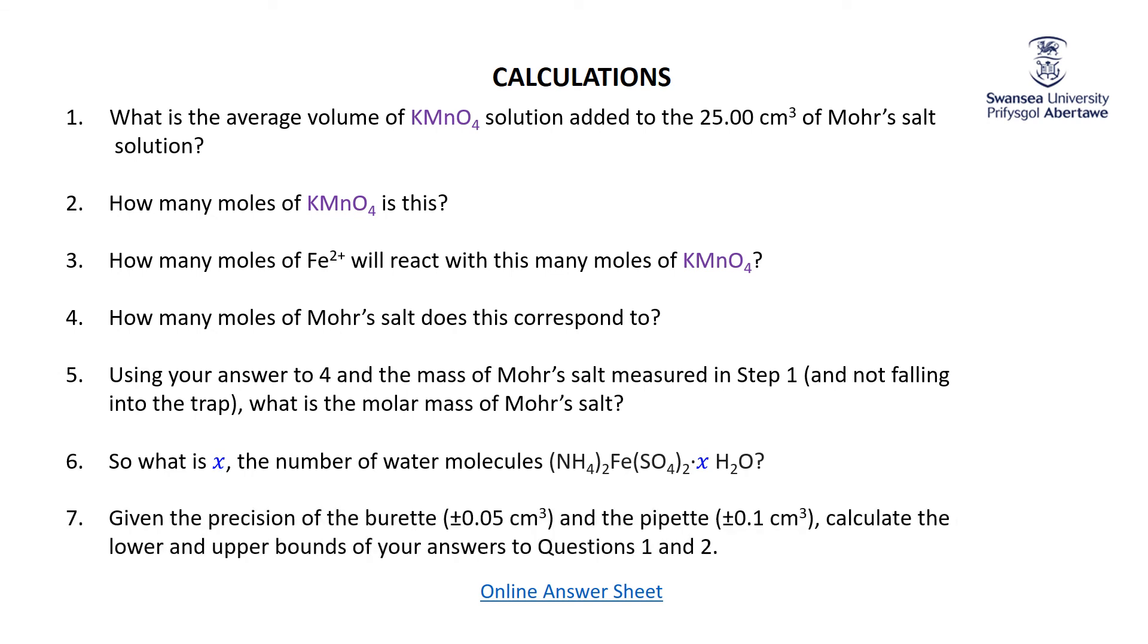I told you the burette was precise to plus or minus 0.05 cubic centimeters and the pipette was precise to plus or minus 0.1 cubic centimeter. What are the upper and lower bounds of the answers to questions one and two, knowing the precision of the two bits of equipment that you used to measure things out?